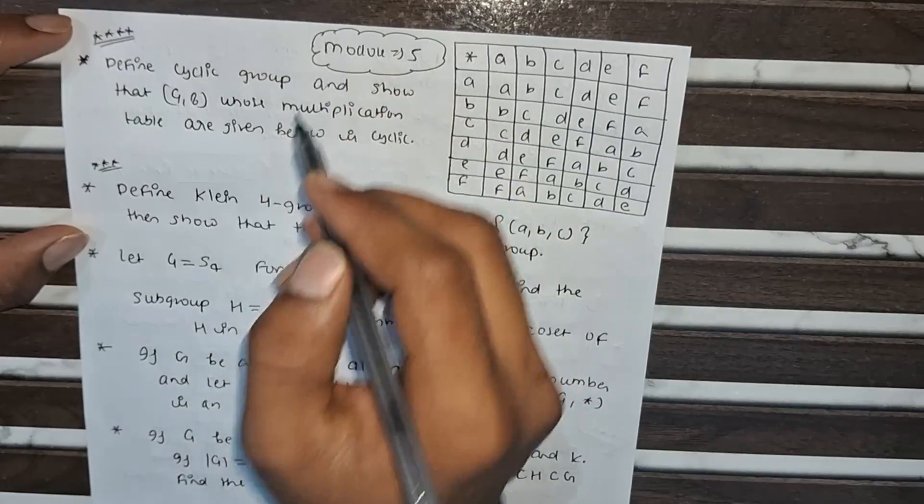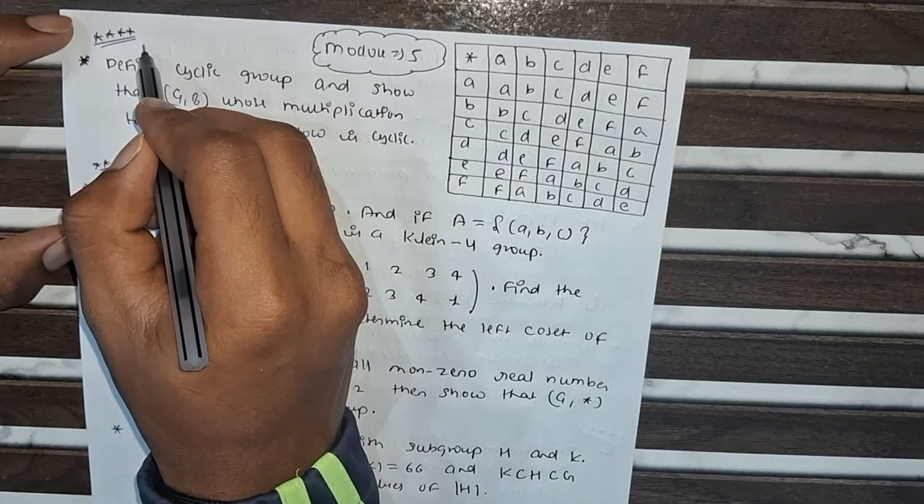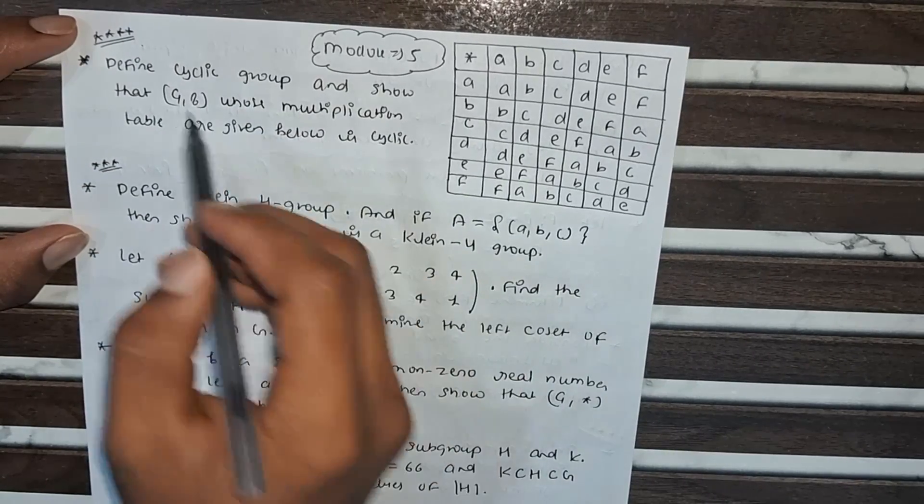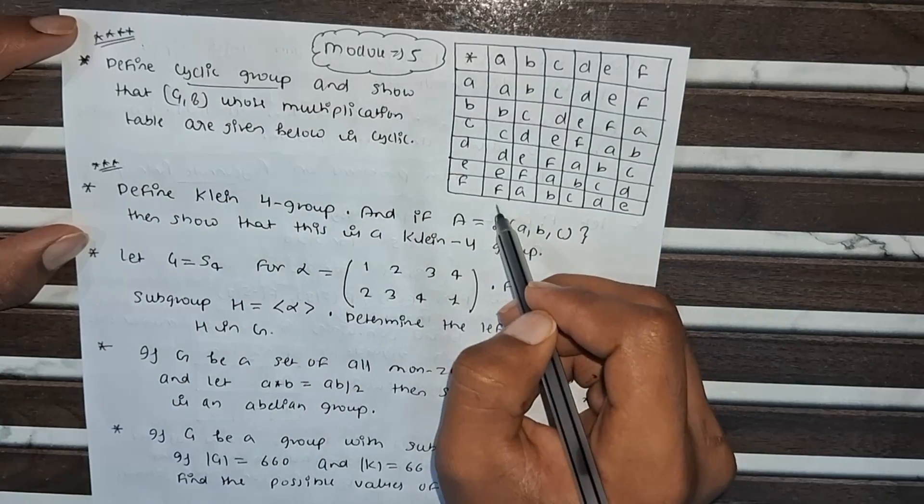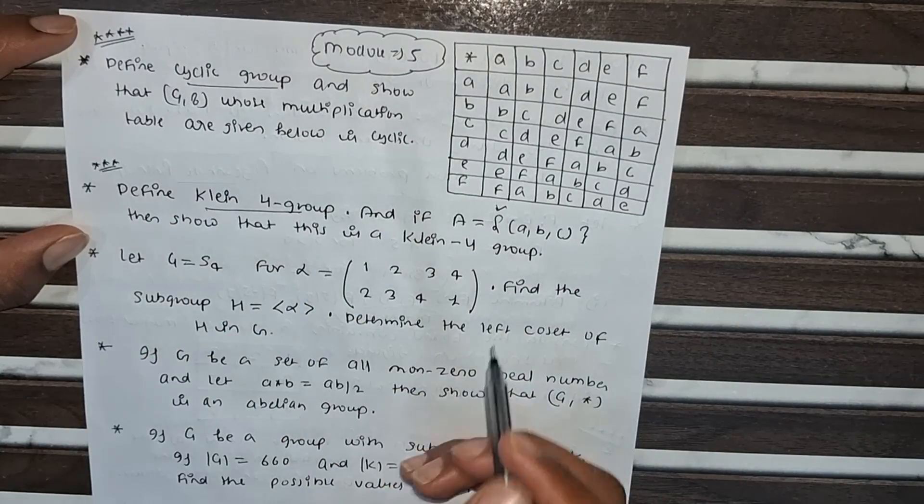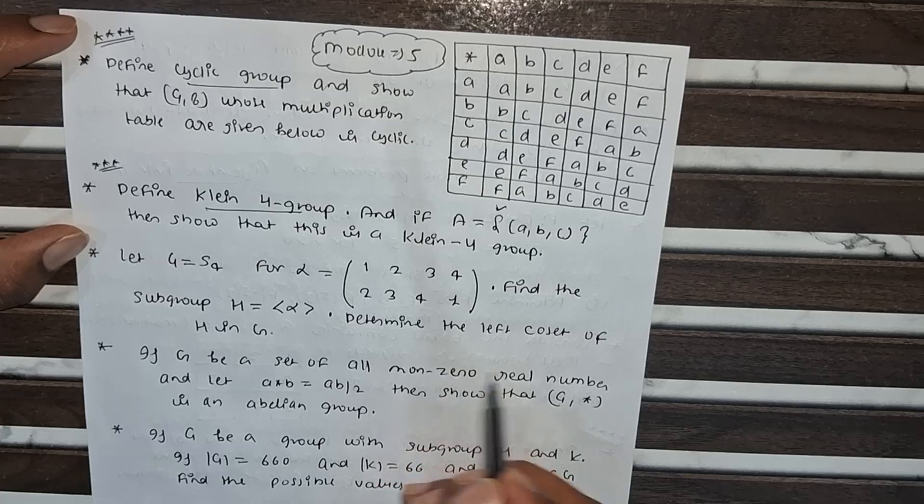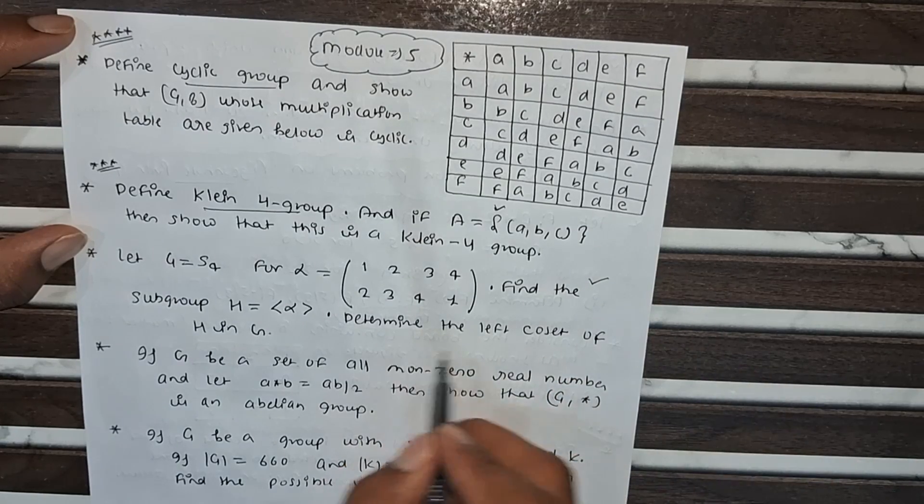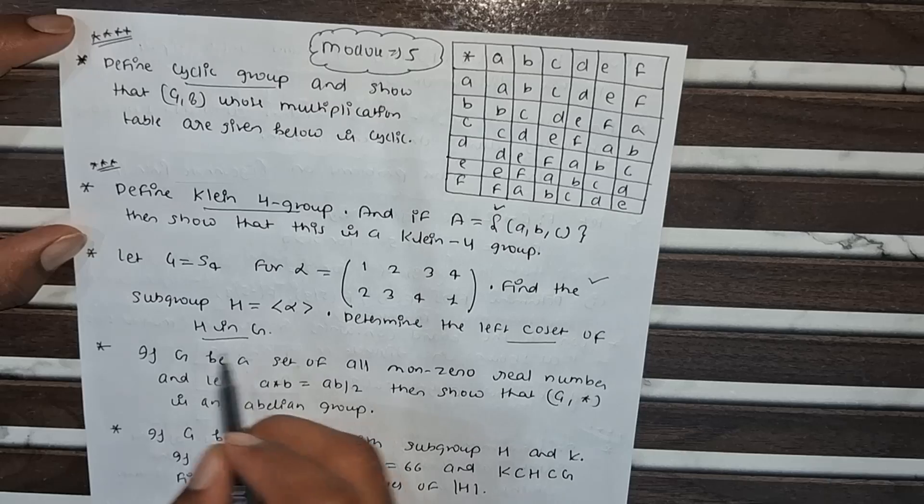Now for module 5. This is one of the important problems that may be asked in the viva examination. Cyclic groups and the Klein four group are most important. This question about cosets of H in G, where H is a subgroup, is important.